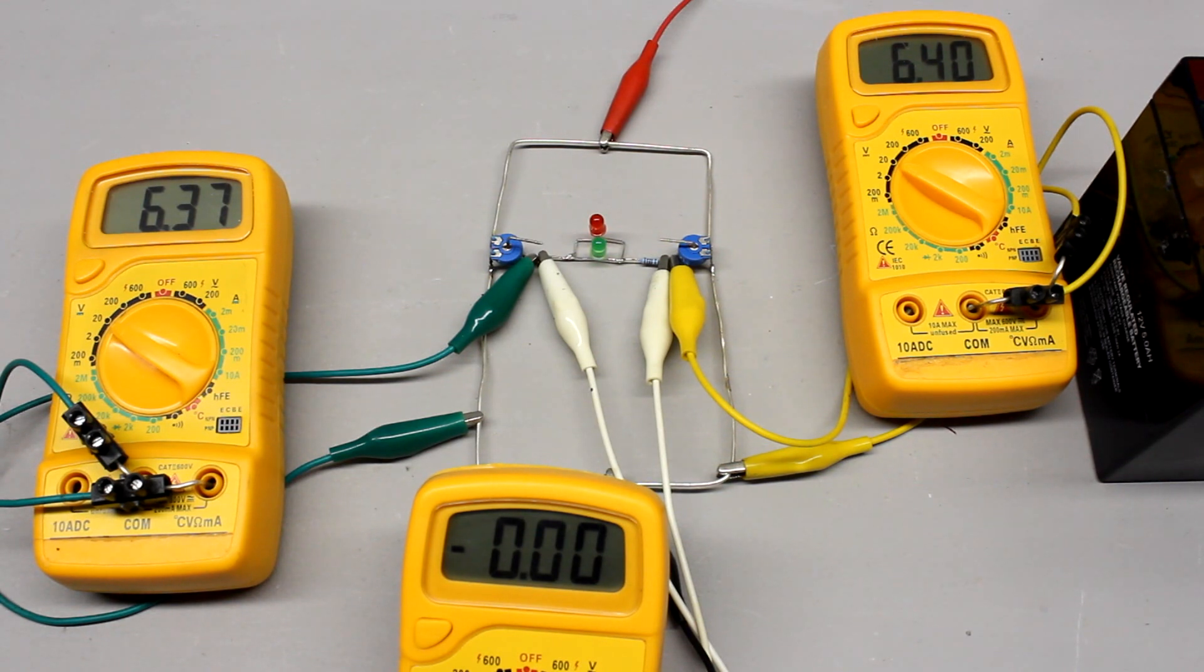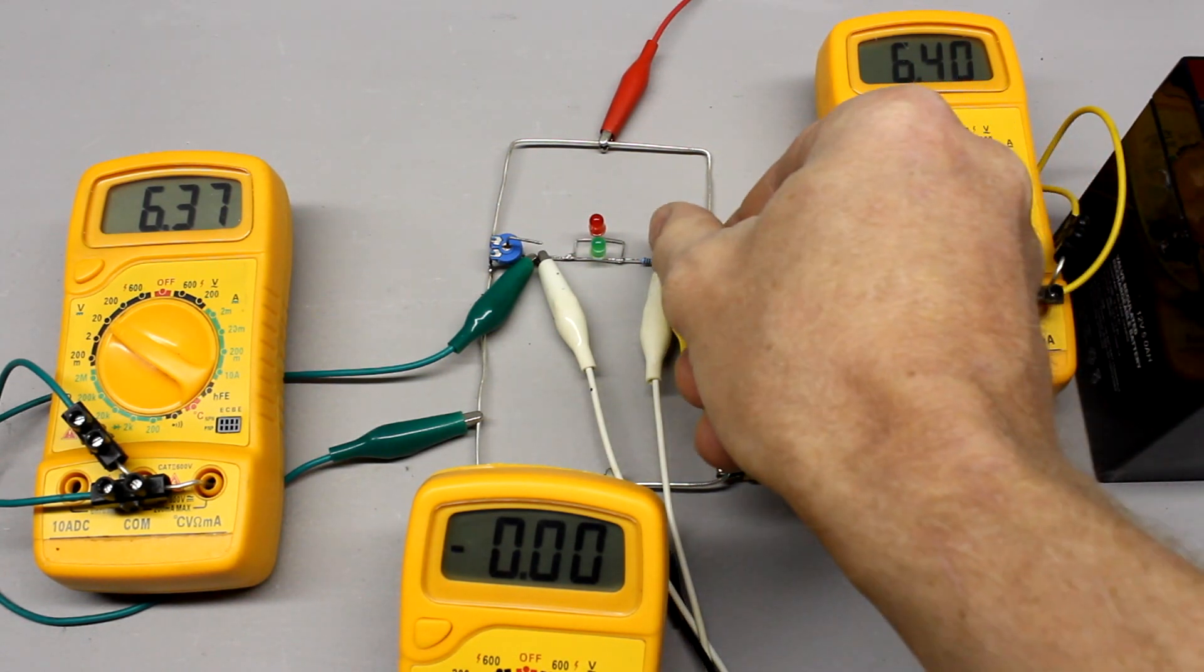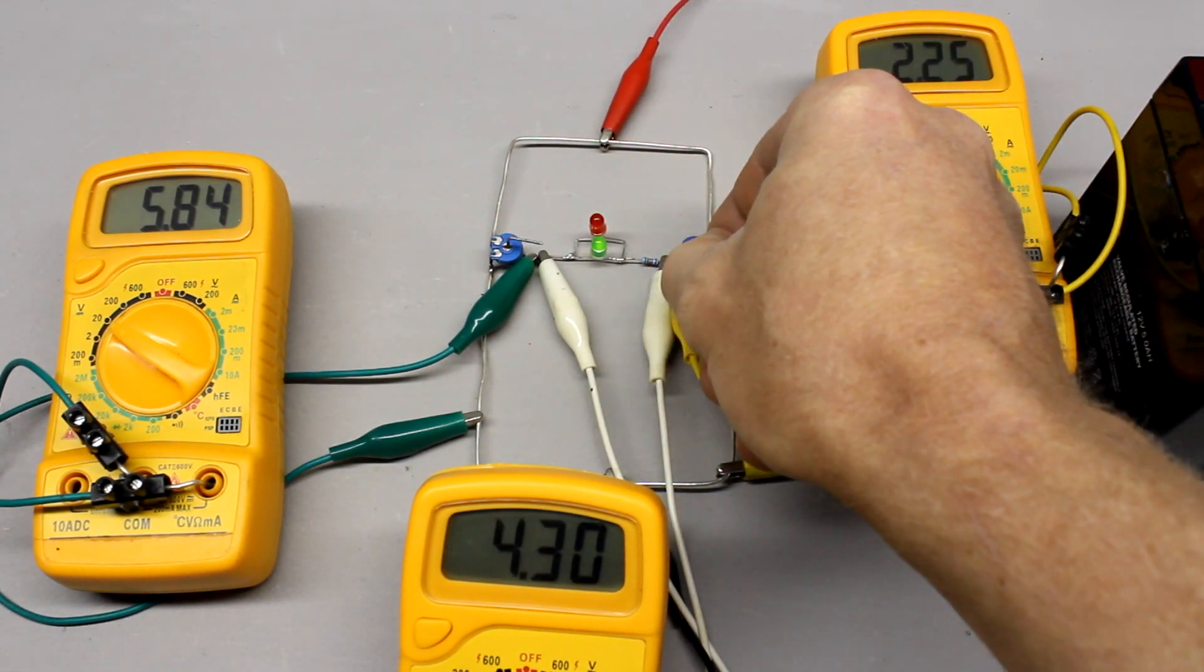If the voltage output of potentiometer number 1 equals those of potentiometer number 2, e.g. both are at their middle position, no voltage is applied to the load.